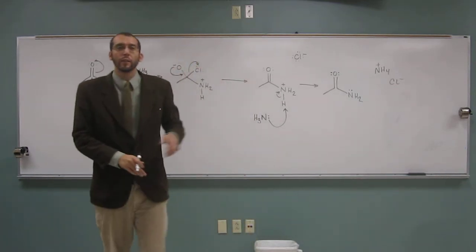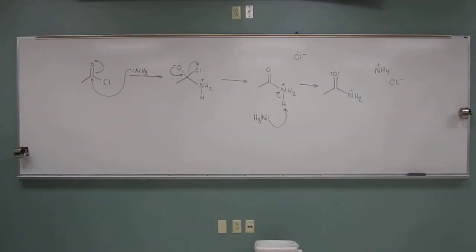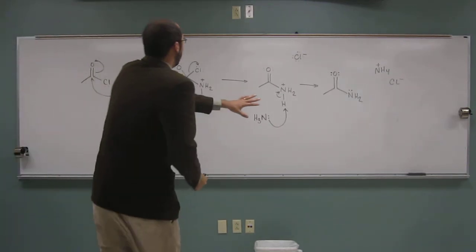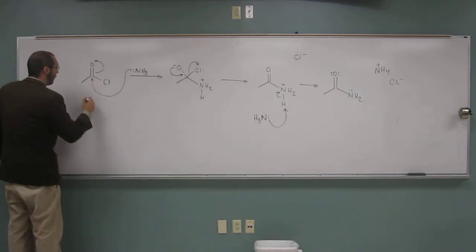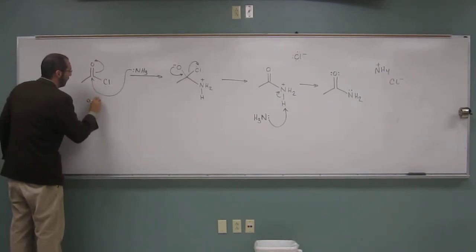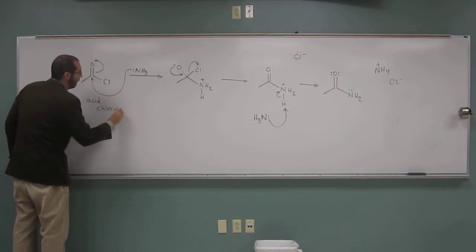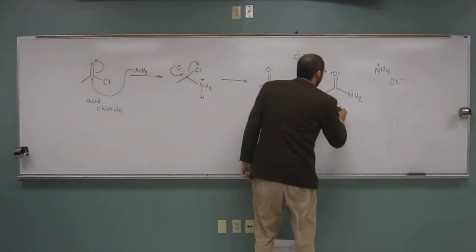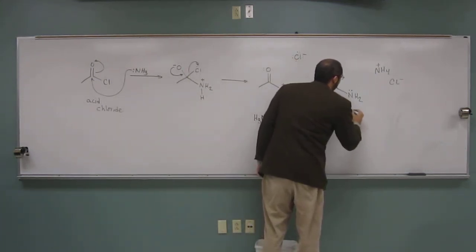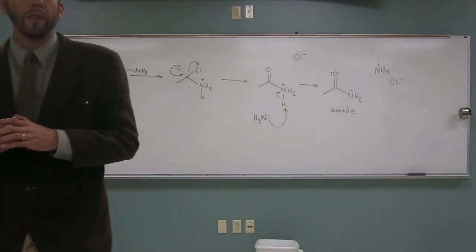So does that make sense? So that's the mechanism of how you do this reaction. So this is, you would call this, forming an amide from an acid chloride. This thing is an acid chloride, acetyl chloride specifically. And this is an amide, acetamide specifically.